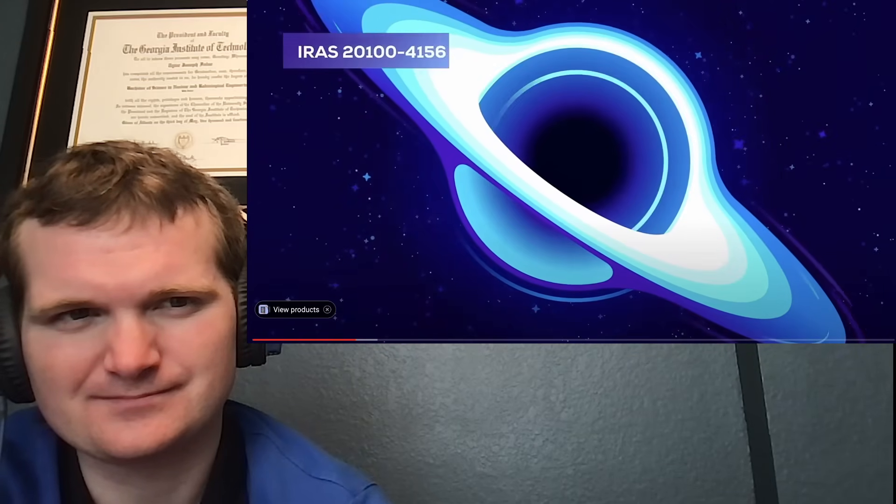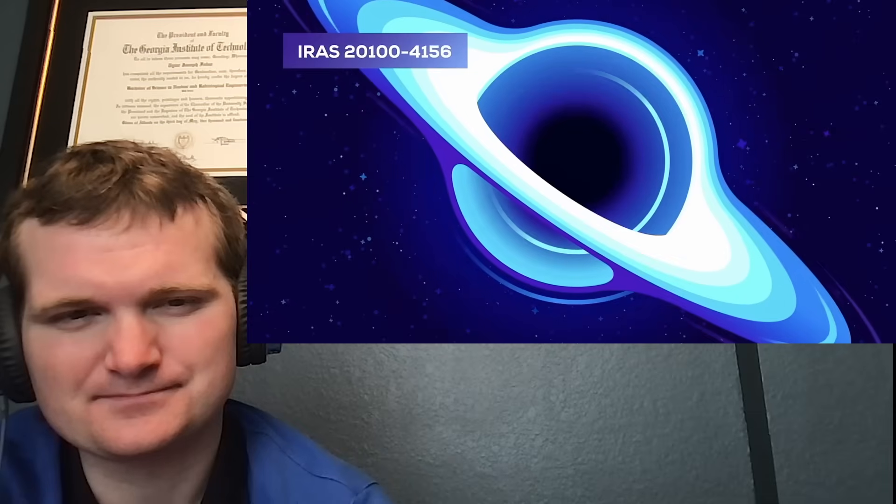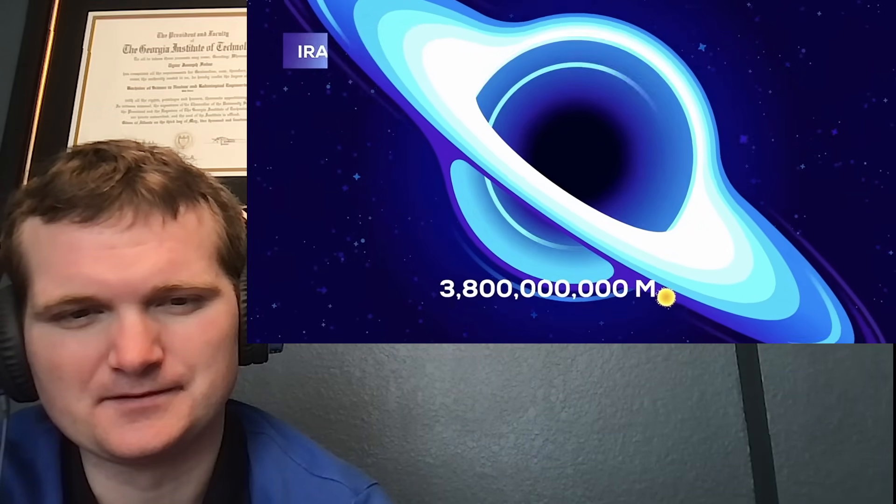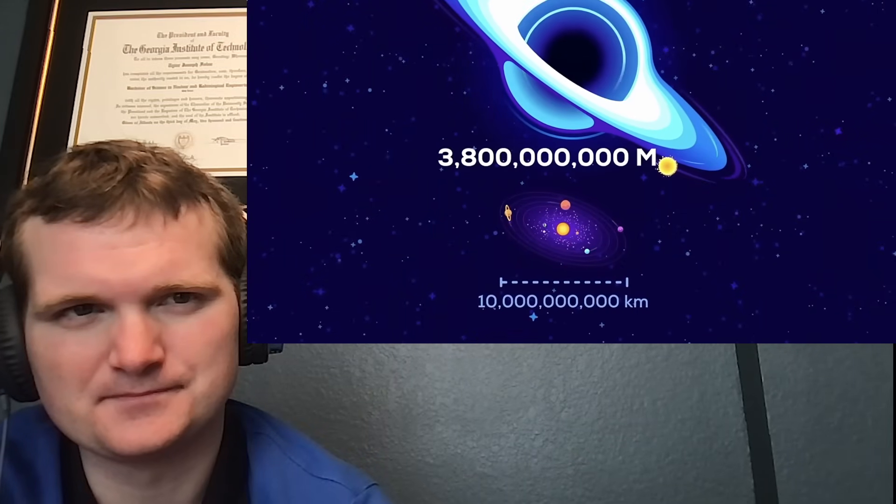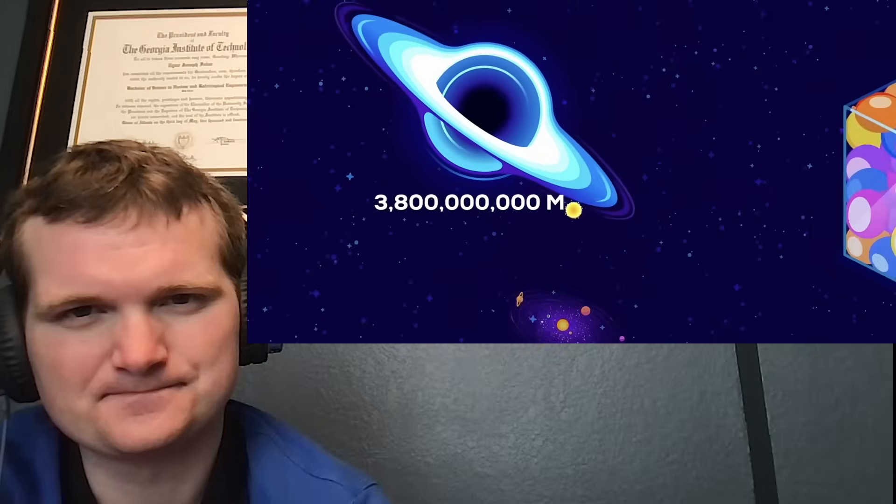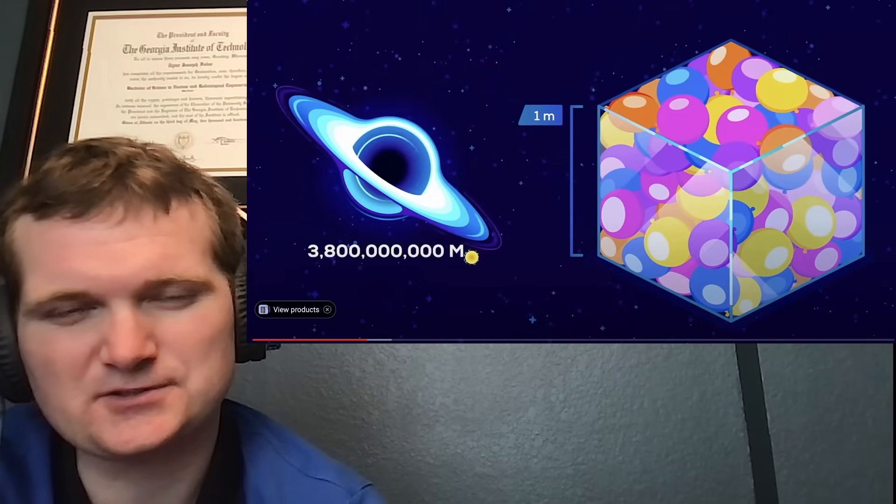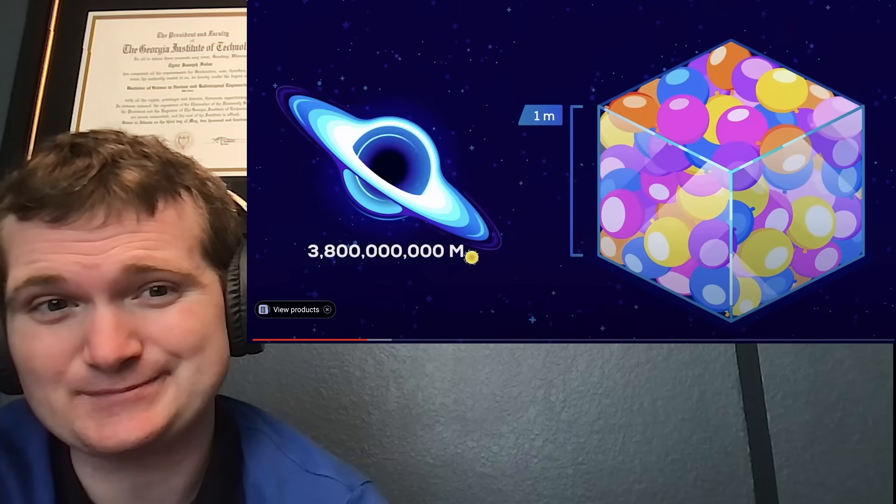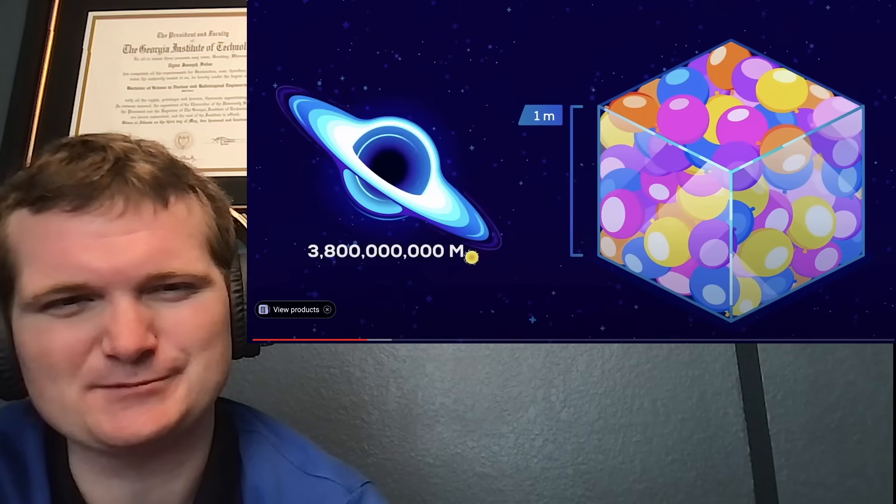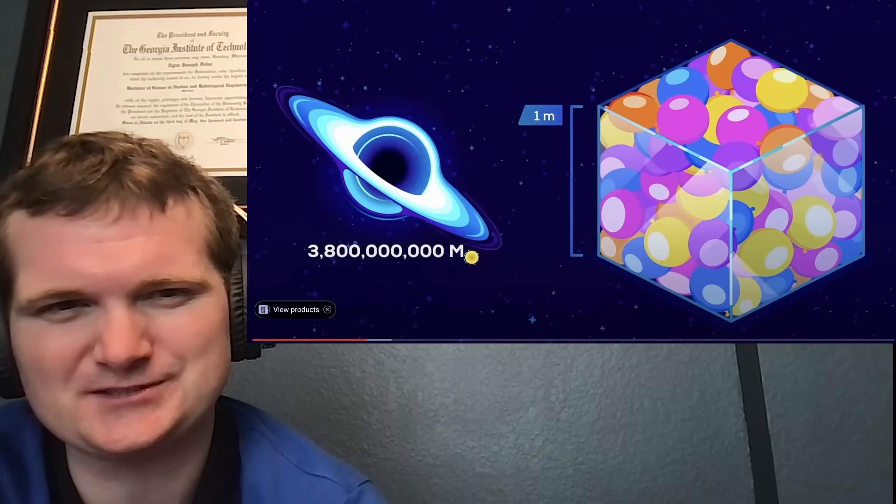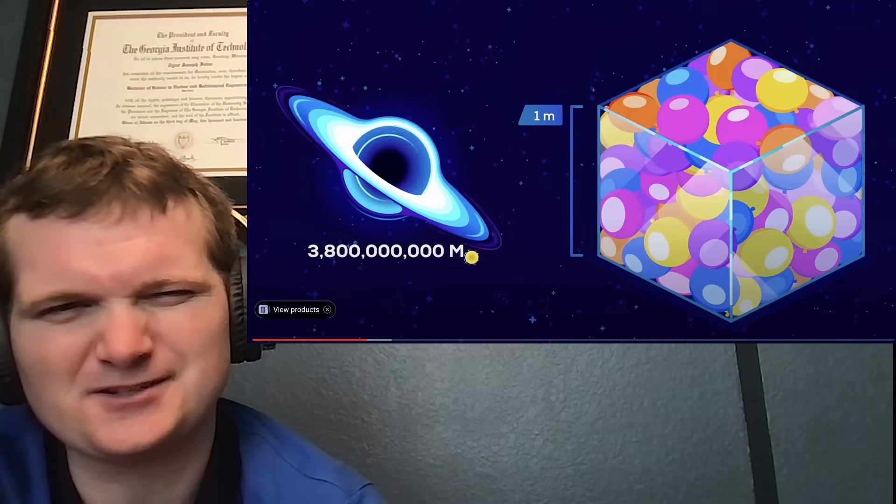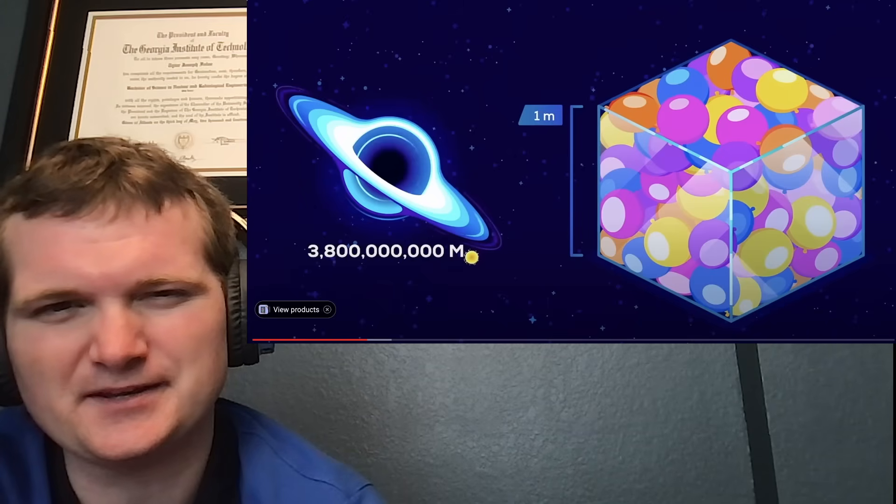The ultra-massive black hole, Iras 2100-4156, has a mass of 3.8 billion suns, and is as wide as the solar system. But because it's so large, it is only as dense as air. Good illustration of the square cube law being blown up to something this big. Interesting, you never think about it in terms of black holes. Usually think about it in terms of building design, or animals. Why certain animals can only get so big. I think Kurzgesagt actually did a few discussions on that as well.